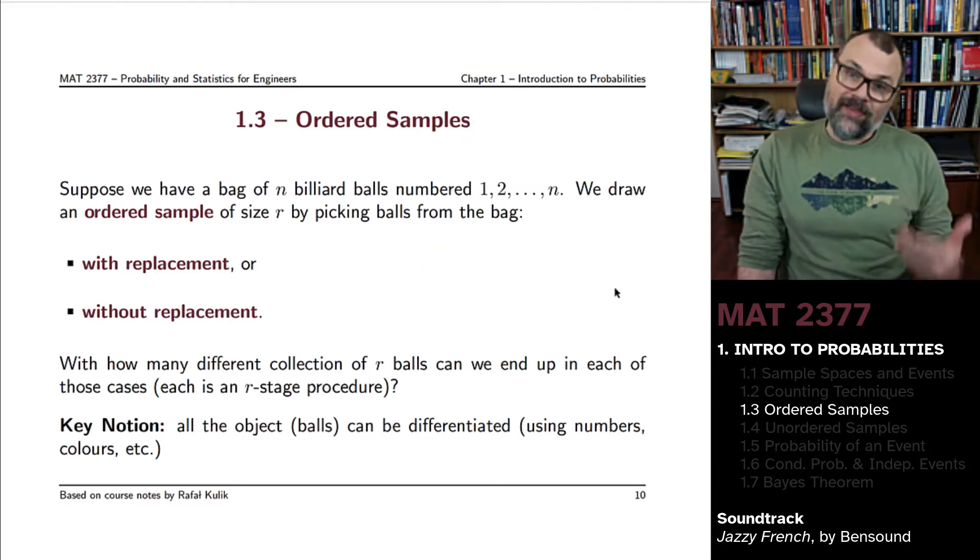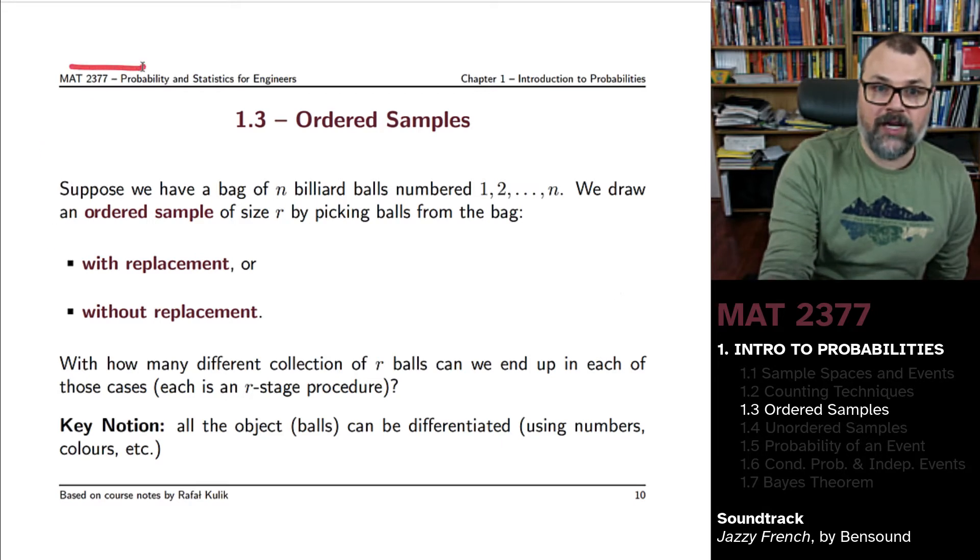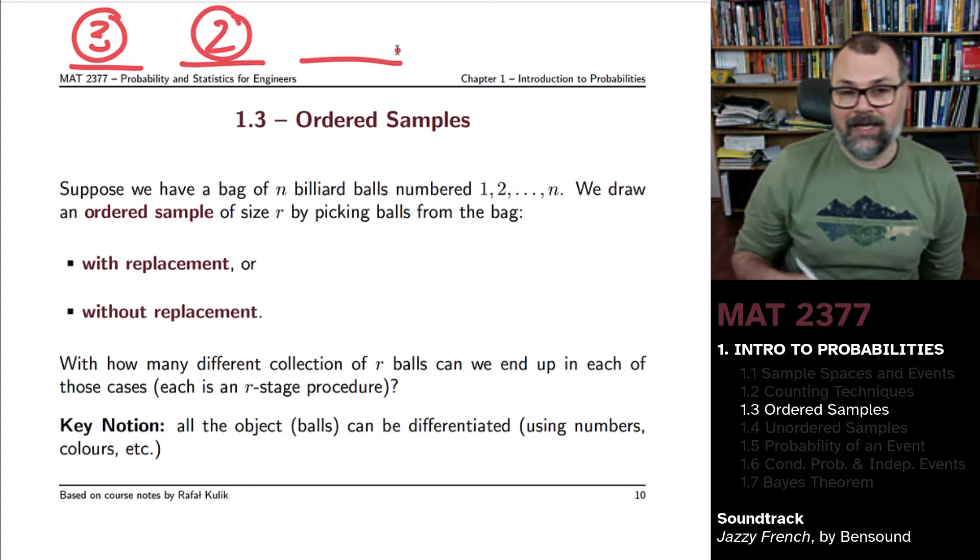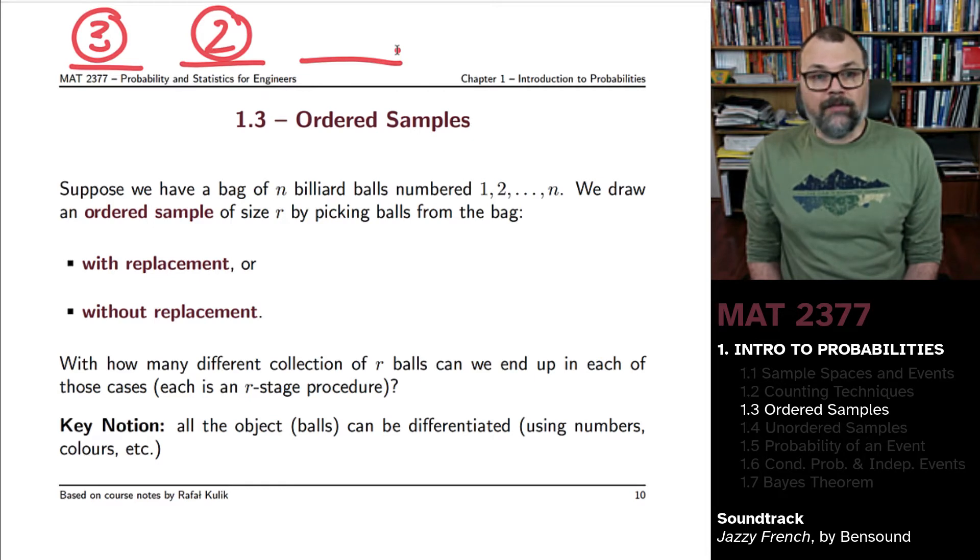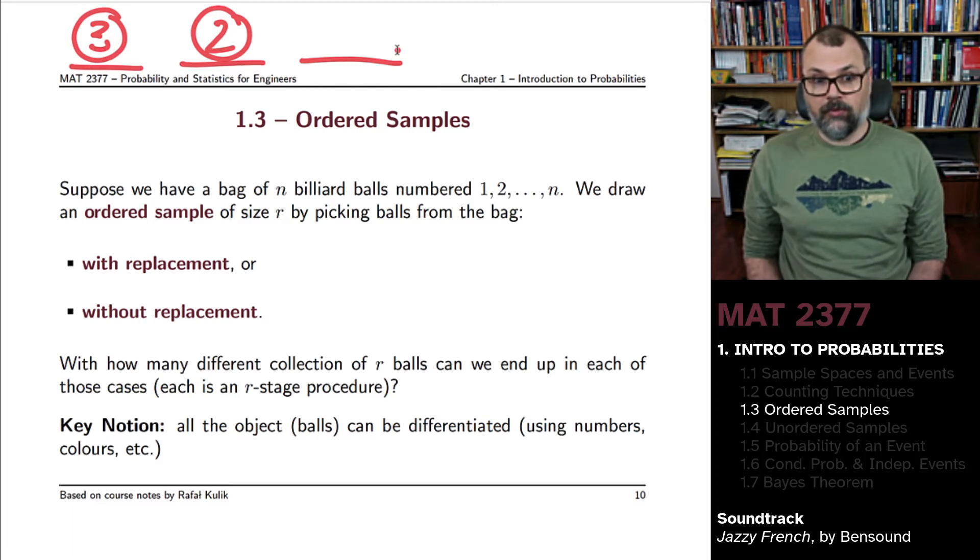You could also do it without replacement. If you've drawn the three ball the first time around and the two ball the second time around, by the time you draw the third ball, it's impossible for you to draw a three or a two because these balls have been removed from the bag from which you draw pool balls.